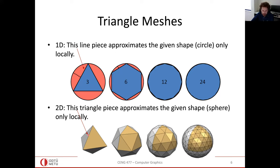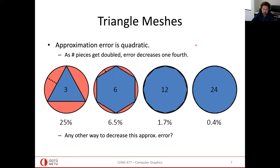This is a crude approximation of a sphere, but as you have more pieces the error decreases. There is actually a quadratic relationship between the number of pieces and the approximation error.